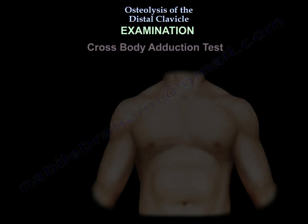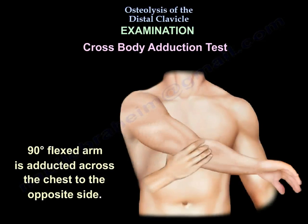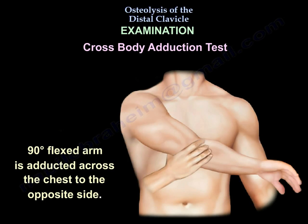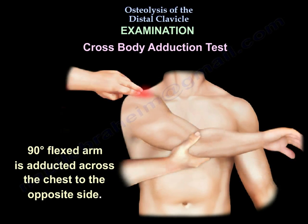Here is how you do the cross-body adduction test. The arm is 90 degrees flexed and is adducted across the chest to the opposite side. You can find that the area of pain and tenderness is just directly over the AC joint.